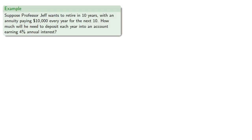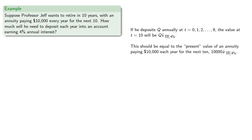Let's consider a different scenario. Suppose Professor Jeff wants to retire in 10 years with an annuity paying $10,000 every year for the next 10. How much will he need to deposit each year into an account earning 4% annual interest? If he deposits Q annually at t equals 0, 1, 2, and so on, the value at t equals 10 will be Q s double dot angle 10 at 4%. This should equal the present value, that's actually the 10 years from now value, of an annuity paying $10,000 each year for the next 10 years. That's $10,000 a double dot angle 10 at 4%.